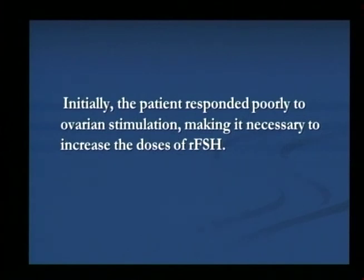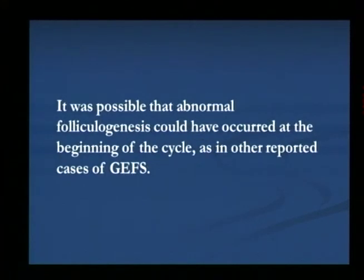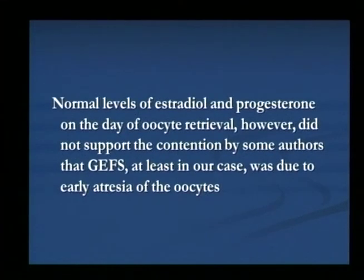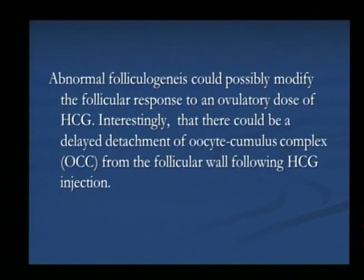Initially, you can see that the patient responded poorly to ovarian stimulation — that is why we resorted to HMG in the subsequent cycle, and FSH and LH were seen in the range of 6 and 1. So abnormal folliculogenesis could have occurred at the beginning of the cycle, and normal levels of estradiol and progesterone on the day of oocyte retrieval did not support early atresia of the oocyte. Abnormal folliculogenesis could possibly modify the follicular response to an ovulatory dose of HCG, resulting in delayed detachment of the oocyte-cumulus complex from follicular fluid following HCG injection.